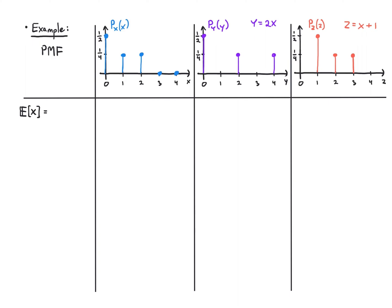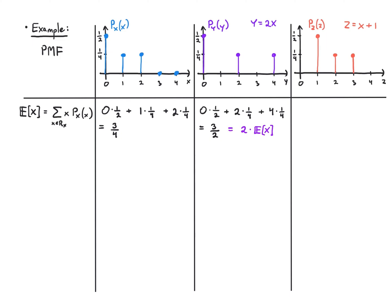Let's work out the expected values explicitly and verify our shortcuts. For x: 0 times one half plus 1 times one fourth plus 2 times one fourth equals three fourths. For y: 0 times one half plus 2 times one fourth plus 4 times one fourth equals three halves, which equals 2 times the expected value of x — consistent with linearity of expectation. For z: 1 times one half plus 2 times one fourth plus 3 times one fourth equals seven fourths, which is 1 plus the expected value of x.